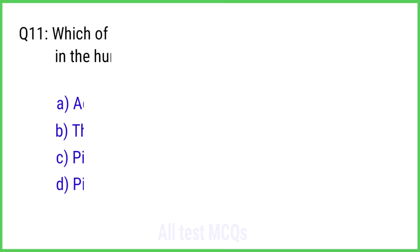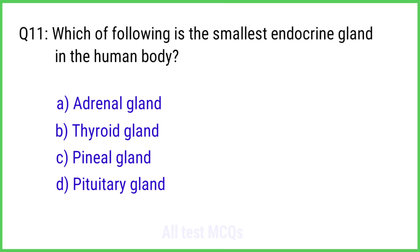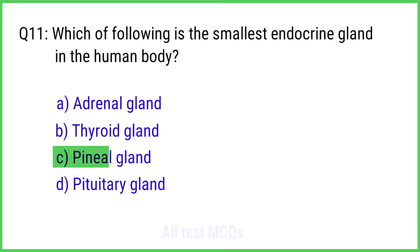Question No. 11. Which of the following is the smallest endocrine gland in the human body? The correct answer is Option C: Pineal gland.